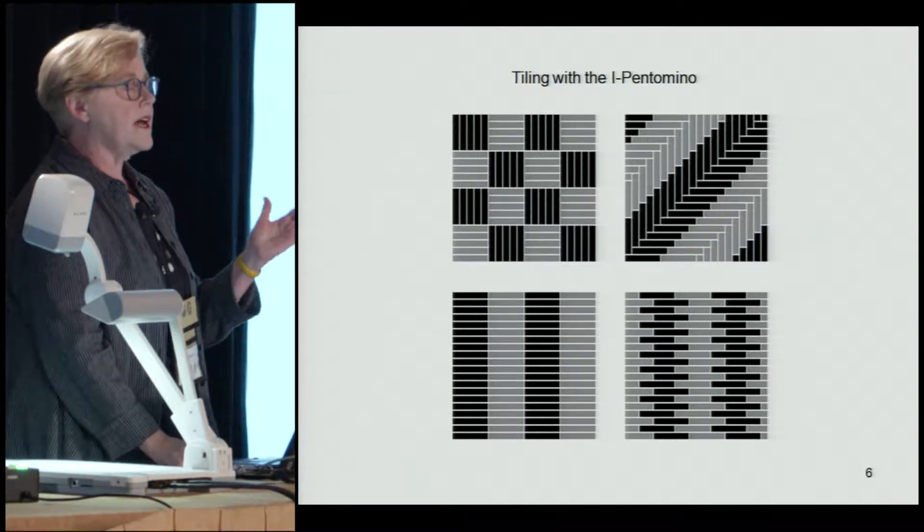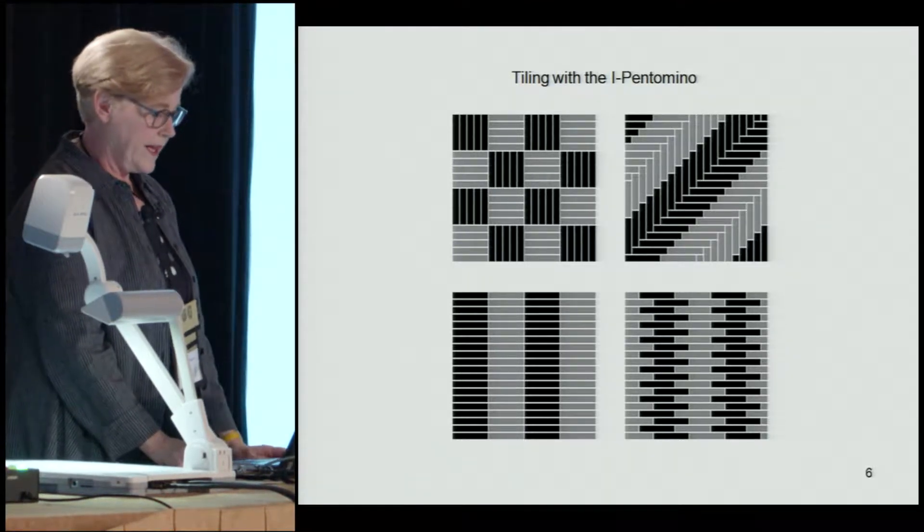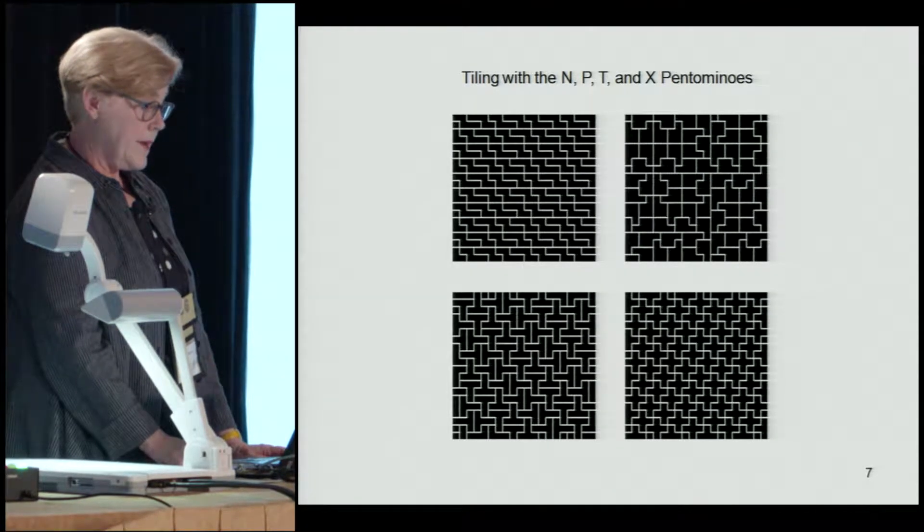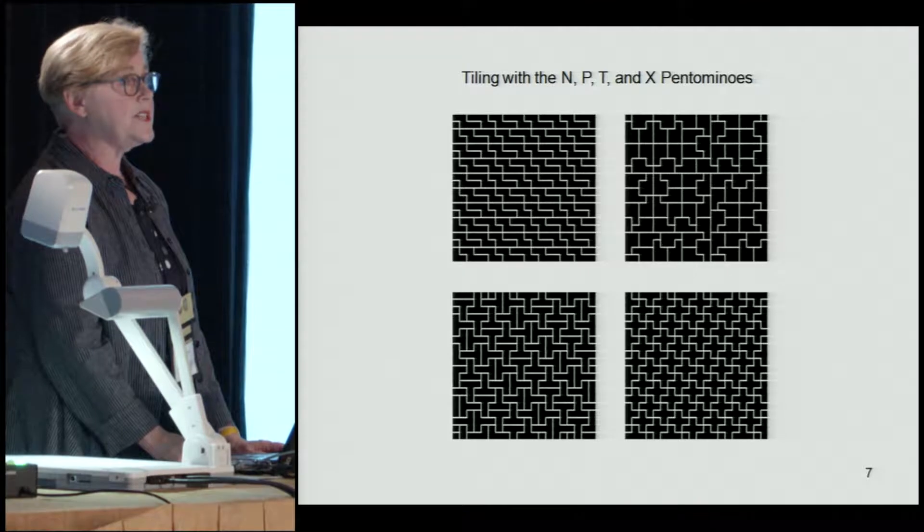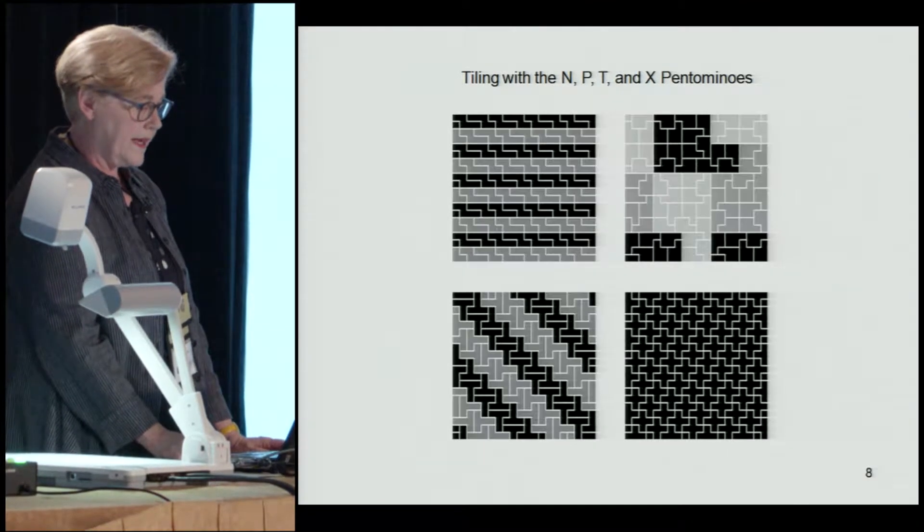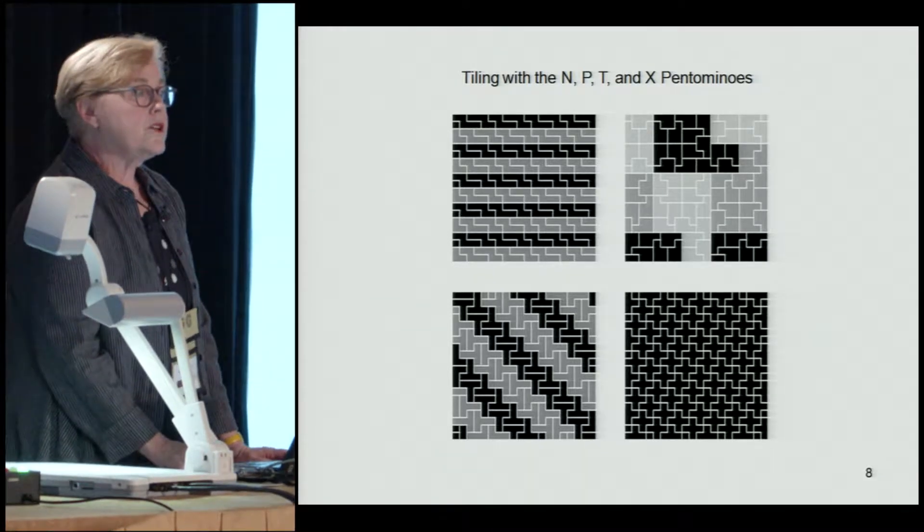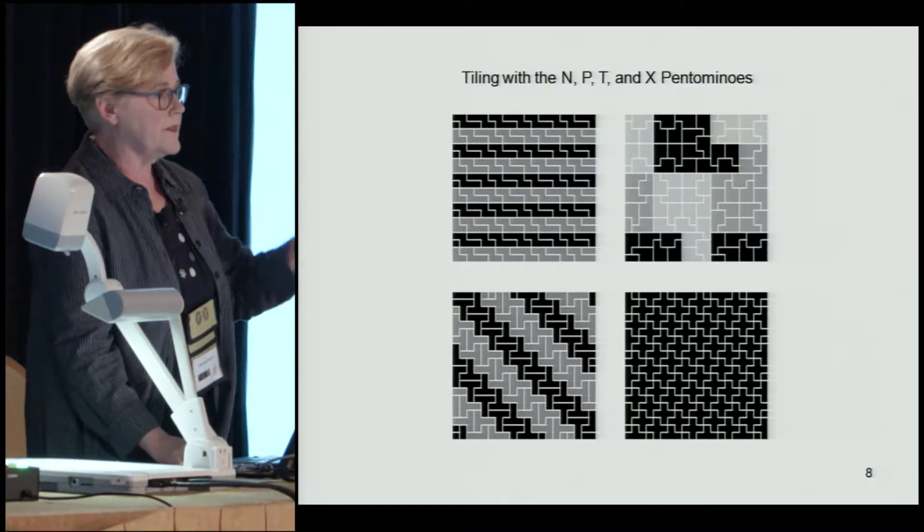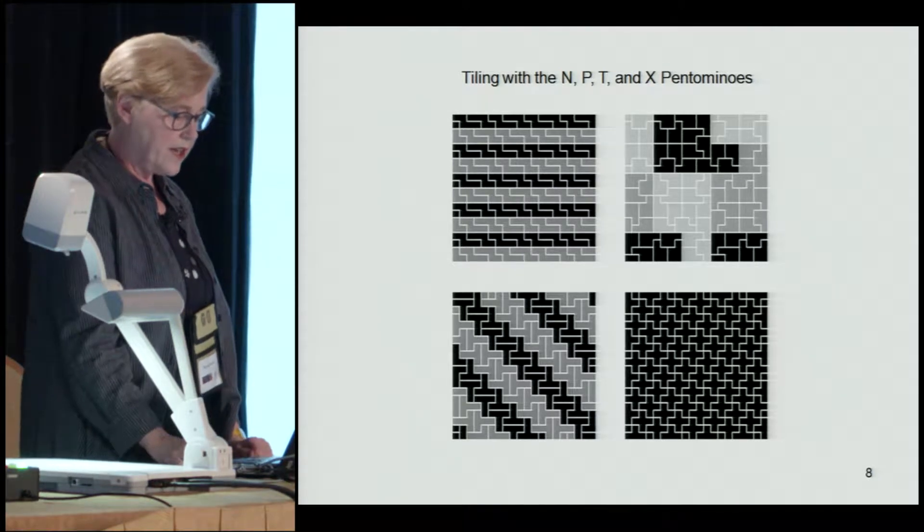As you can see, a simple tile can produce complex patterns depending on the arrangement. Here's some more examples: the N, the P, the T, and the X pentominoes in tilings that can be extended to cover the whole plane. Here's a shaded version where you can see more of what's going on, including the fact that the one in the upper right is based on the reptile properties of the P pentomino - it's a sort of substitution or recursive tiling.